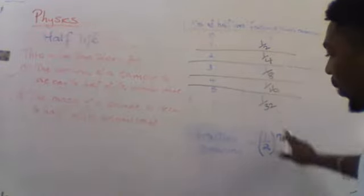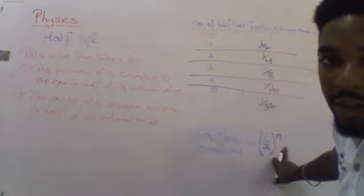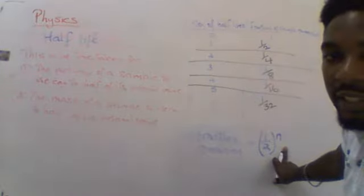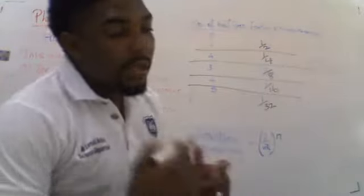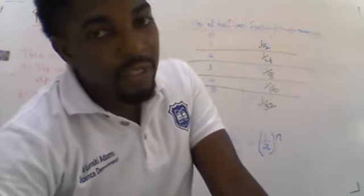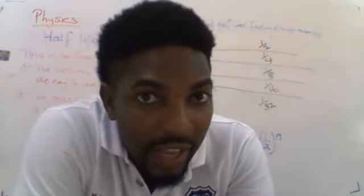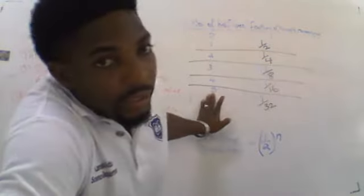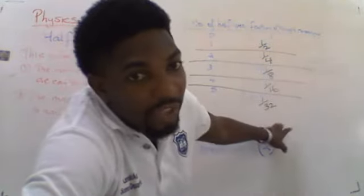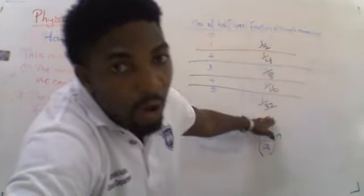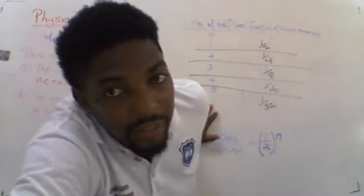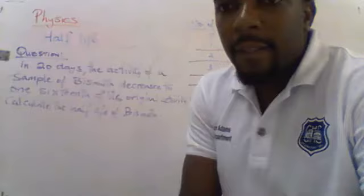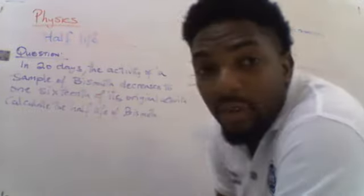There is a formula to determine the fraction of the sample remaining: (1/2)^n, where n represents the number of half-lives. You can substitute the number of half-lives into this formula to find the fraction remaining. The table works in both directions — the number of half-lives implies the fraction remaining, and the fraction remaining implies the number of half-lives.